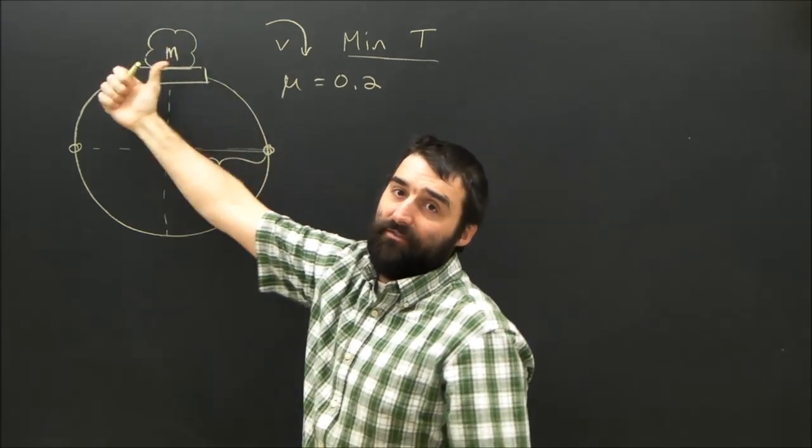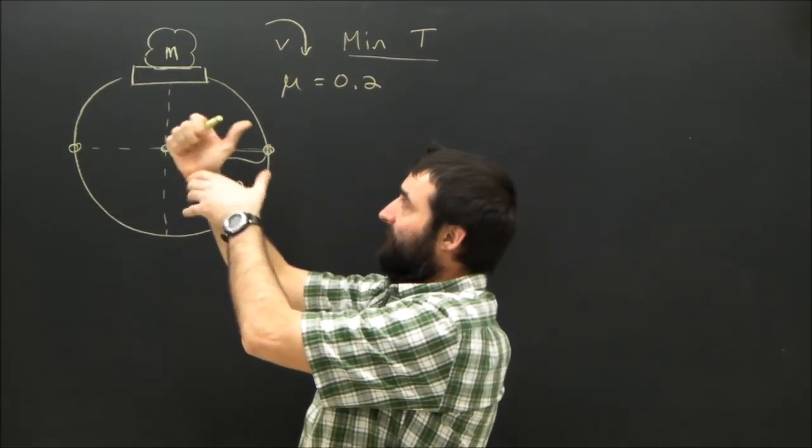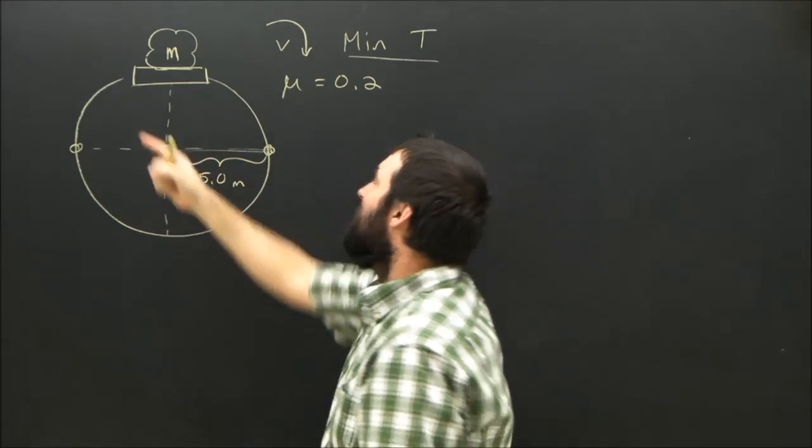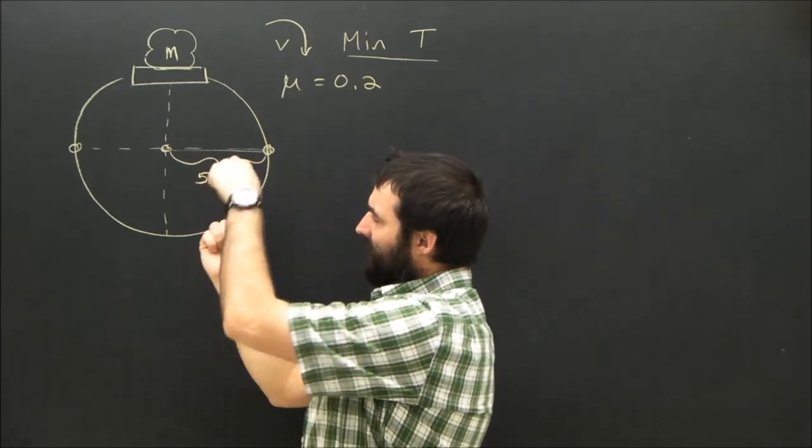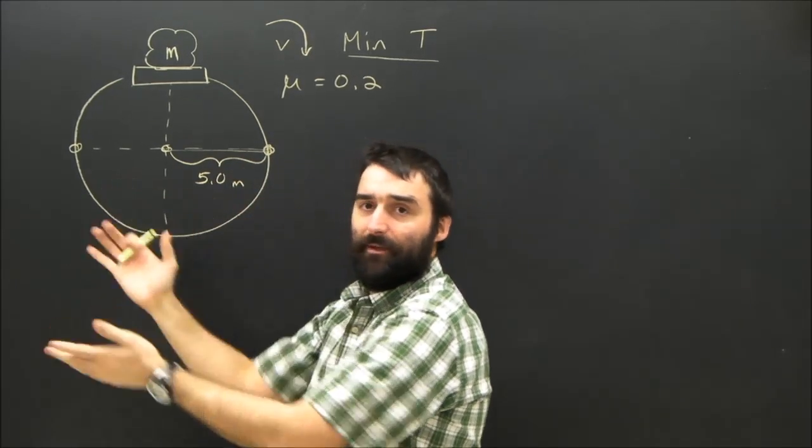At the top it's never going to fly off. It's moving with the Ferris wheel, so there's no problem. But at the sides it's going to have to be turning its most, right? At the bottom again, gravity, normal force, nothing's going to make it go sideways.